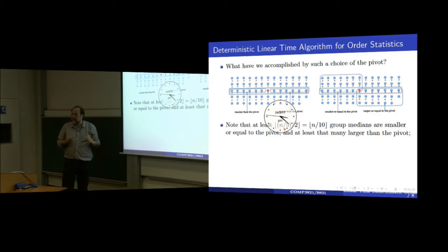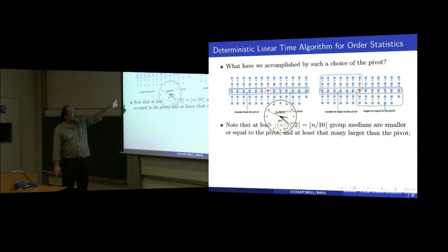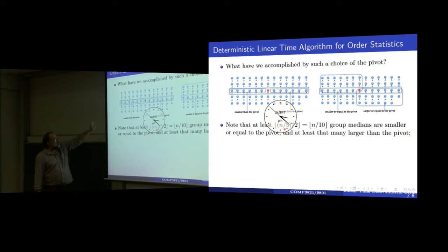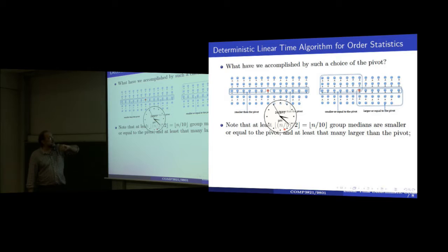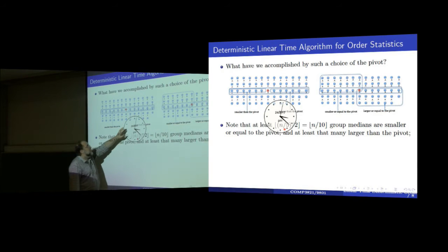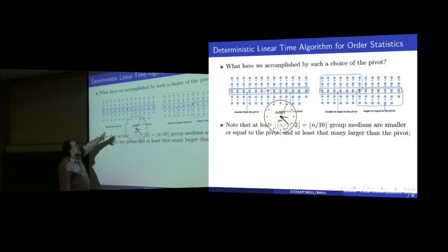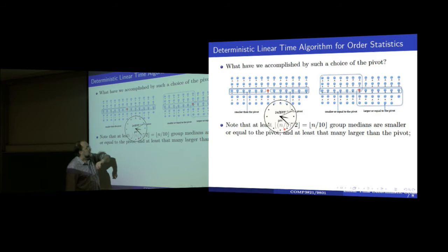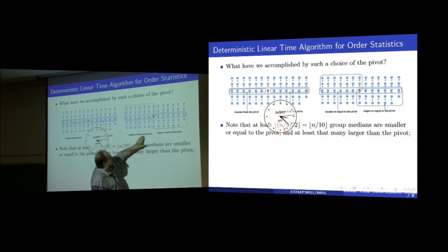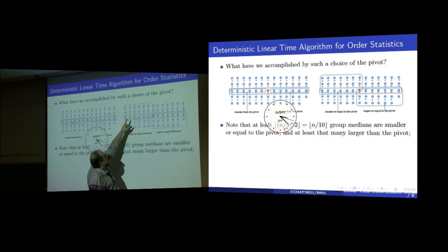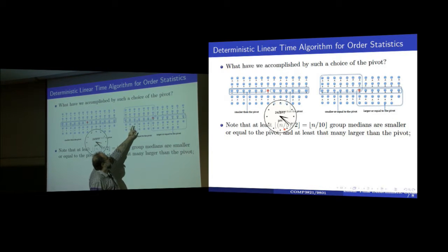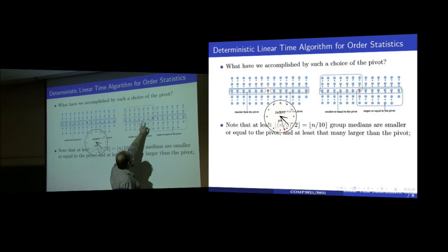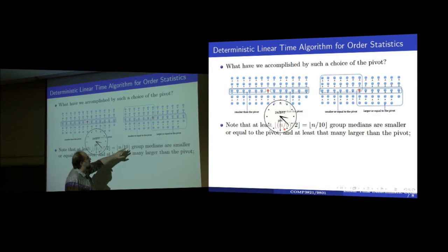So are you with me? How does the algorithm work? Split it in groups of 5. Sort them, each group — sort each group. That's all doable in linear time. Recursively call the algorithm to find the pivot that will be the median of the middle ones. And split the array into those that are smaller and those that are larger. Now you see that all of these elements must be smaller or equal than the pivot, because every element there is smaller or equal than the corresponding middle element here. And this element, by definition, is smaller or equal than the pivot.